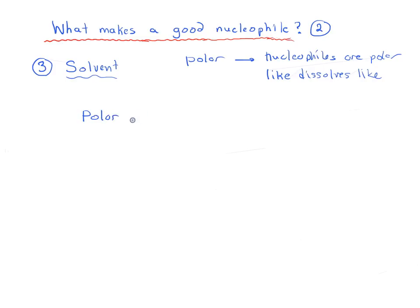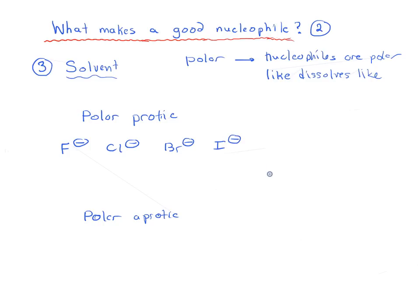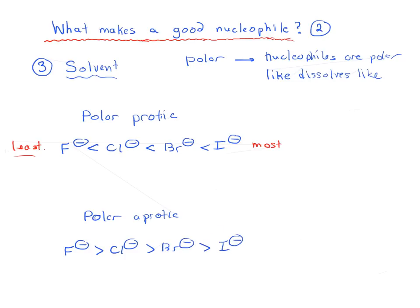There are two different types of solvents. The trend is this: as you go down the periodic table from fluoride to chloride to bromide to iodide, your nucleophilicity increases in a polar protic solvent. So iodide is the most nucleophilic and fluoride is the least. In a polar aprotic solvent, this trend reverses itself — fluoride is actually a better nucleophile than chloride, which is better than bromide, which is better than iodide. So F⁻ is the most nucleophilic and I⁻ is the least.